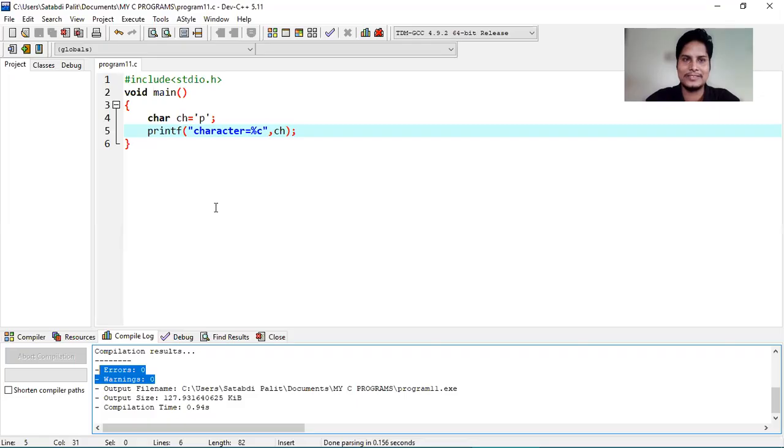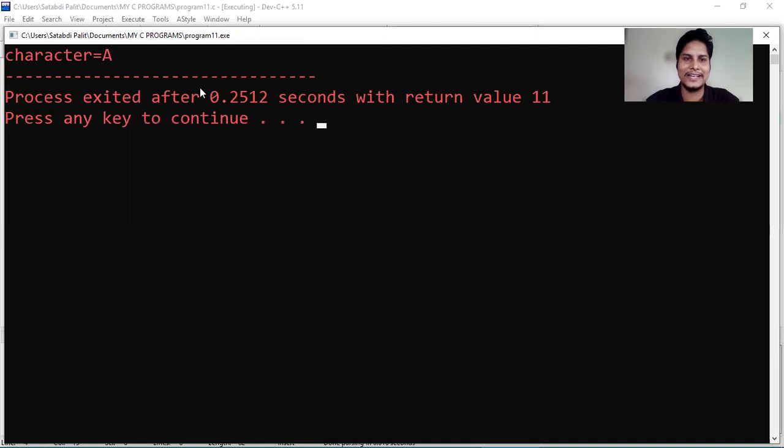So, let me change the character. Suppose I'm changing character e to character a. Let's see how this one is character a. That means whatever value I'm assigning to that character variable that is displayed in the output screen.